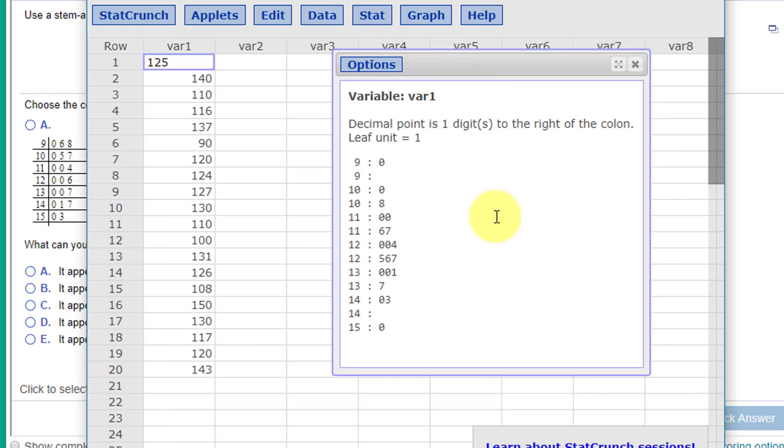Click OK, and we have a standard stem-and-leaf plot. Now I would point out that StatCrunch divides the stems into two parts: zero to four and then five to nine. We can see here for the stem nine, we've got zero there, so that